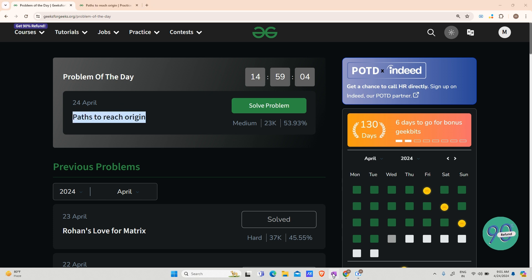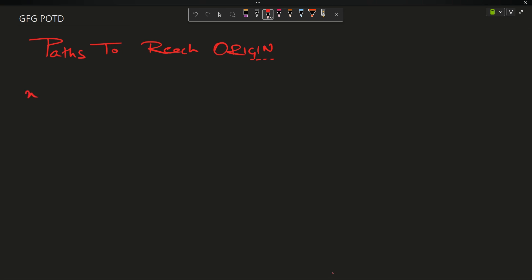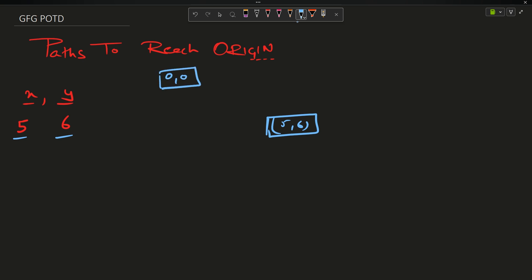The problem says that you are provided with x and y. Suppose your x is 5 and your y is 6. For given x=5 and y=6, you construct a matrix. You are standing at point (5, 6) and there is an origin at (0, 0). You have to reach from (5,6) to the origin at (0,0).